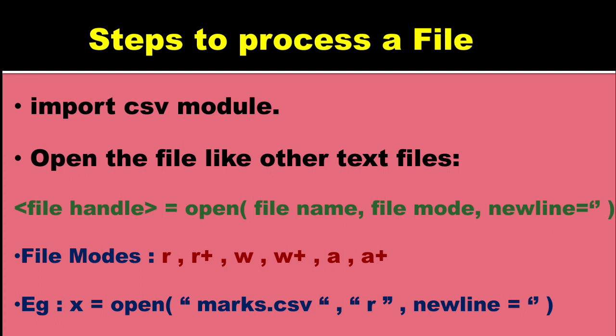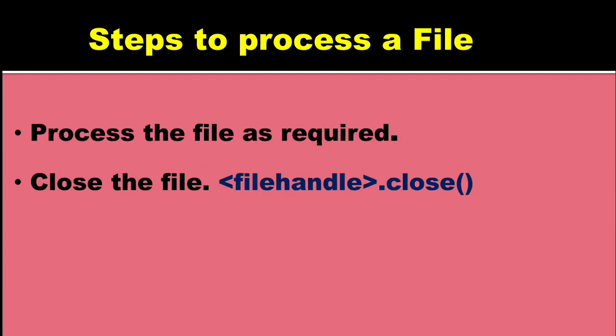The file modes are the same as for any text file: r, r+, w, w+, a, a+. For example, you would write: open('marks.csv', 'r', newline=''). The mode can be anything but the newline argument should be included, especially when opening for writing. Then process the file as required, and finally close the file just like you close any simple text file. In the next videos I will be discussing how to write data on a CSV file, how to read data from a CSV file, and what is the role of the newline argument in CSV files. If you have any confusion, you can write it in the comment section. Thank you so much.